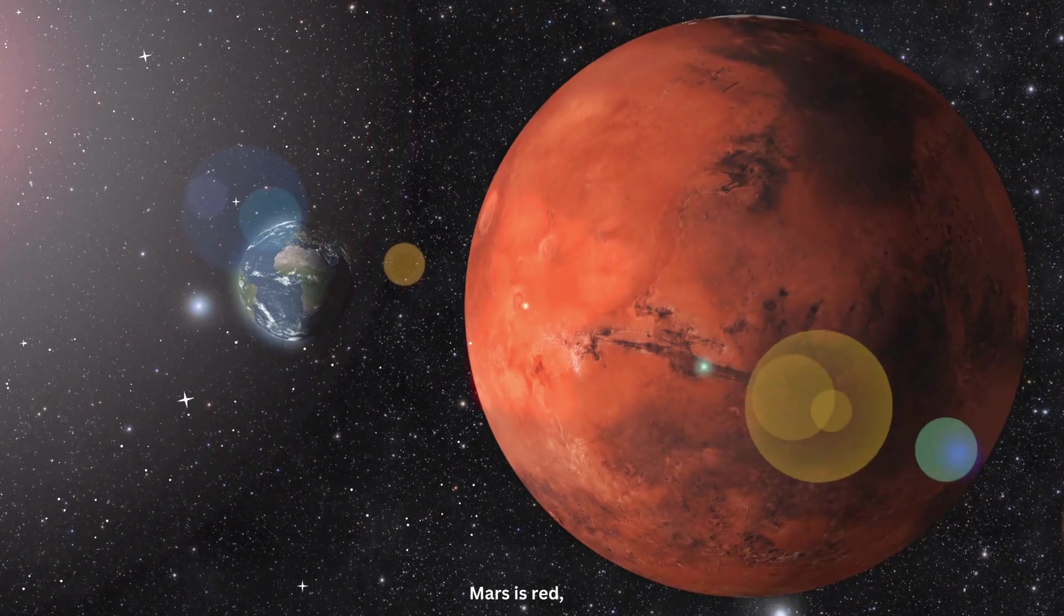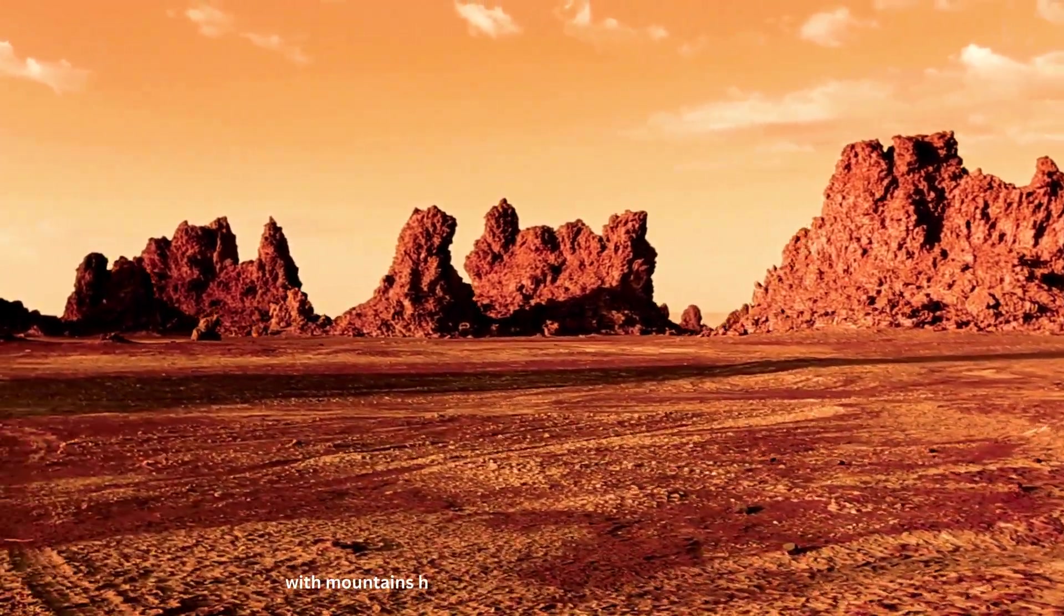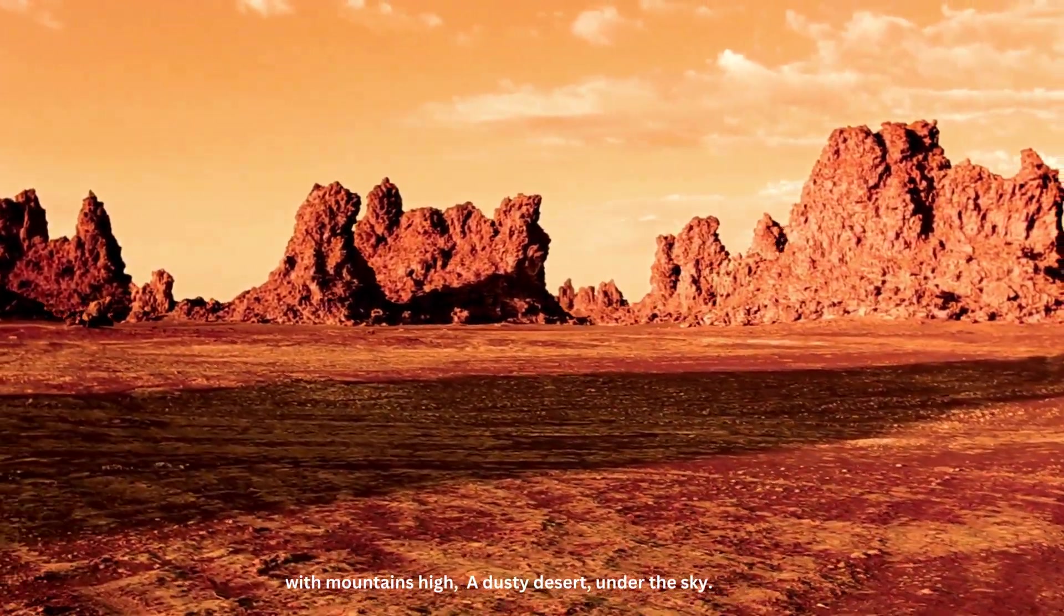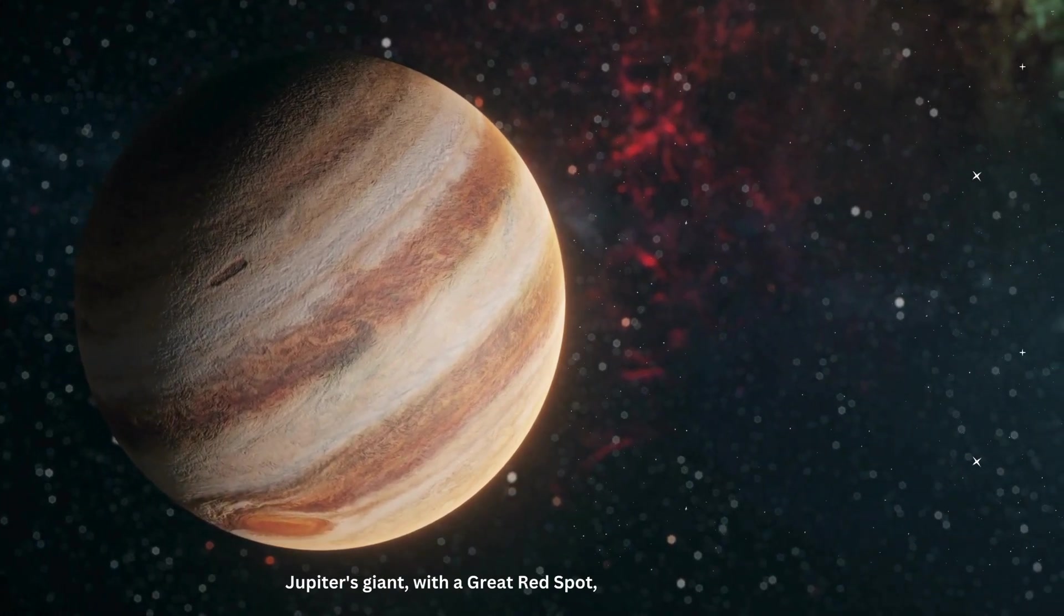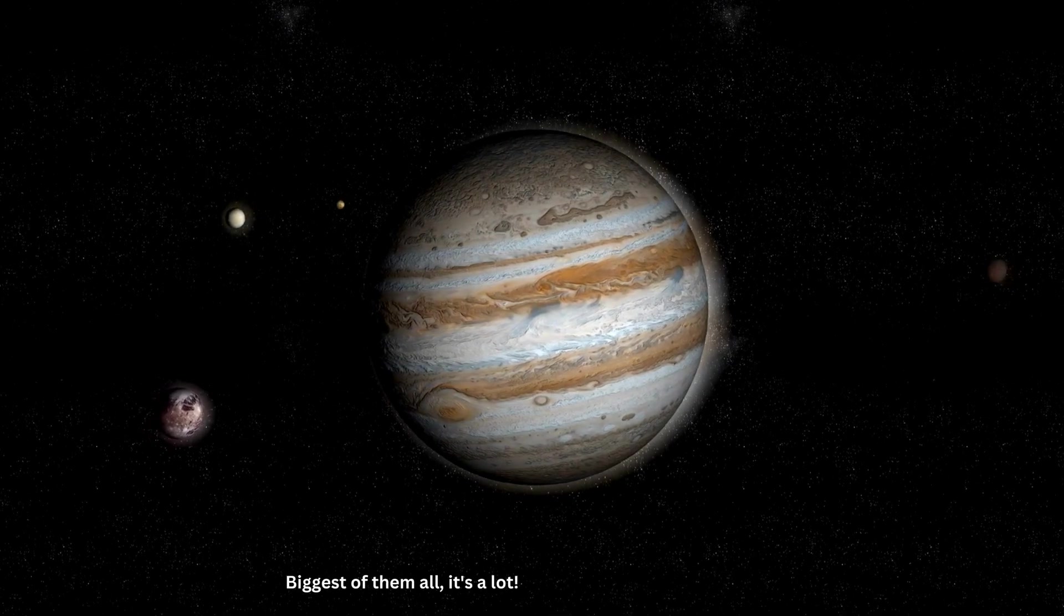Mars is red, with mountains high. A dusty desert under the sky. Jupiter's giant, with a great red spot. Biggest of them all, it's a lot.